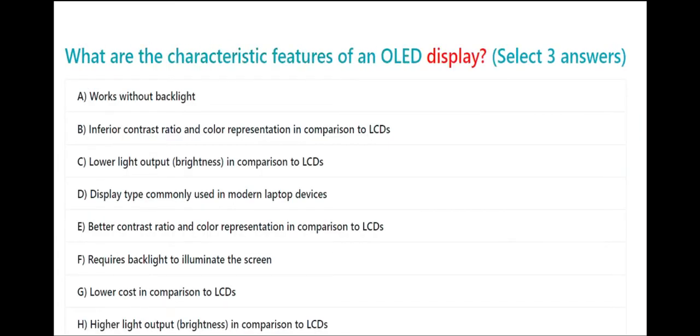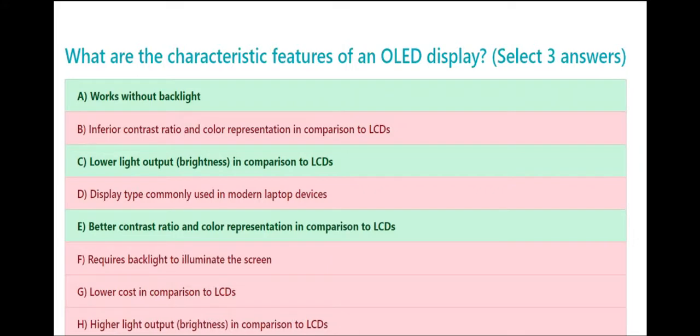What are the characteristic features of an OLED display? Select three answers. A. Works without backlight. B. Inferior contrast ratio and color representation in comparison to LCDs. C. Lower light output, brightness, in comparison to LCDs. D. Display type commonly used in modern laptop devices. E. Better contrast ratio and color representation in comparison to LCDs. F. Requires backlight to illuminate the screen. G. Lower cost in comparison to LCDs. H. Higher light output, brightness, in comparison to LCDs. The correct answer is E. Better contrast ratio and color representation in comparison to LCDs.